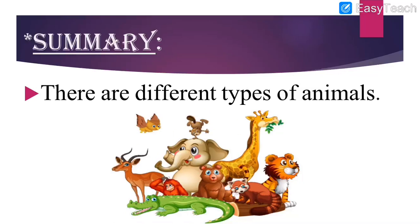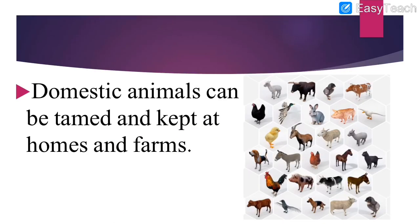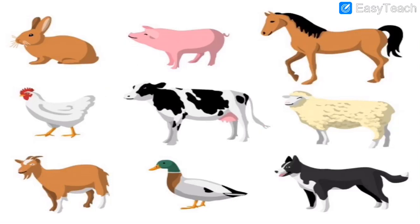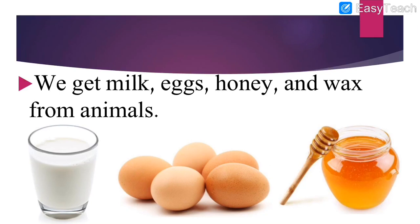Domestic animals can be tamed and kept at homes and farms. 'Tamed' means we can give them training — we can teach them and they will learn. These are the animals which are domestic and can be tamed. We had seen images of animals that can be tamed like cow, horse, sheep, dog, rabbit, etc. Then we had seen the products we get from animals: milk, egg, honey, wax — all these are products we get from animals.